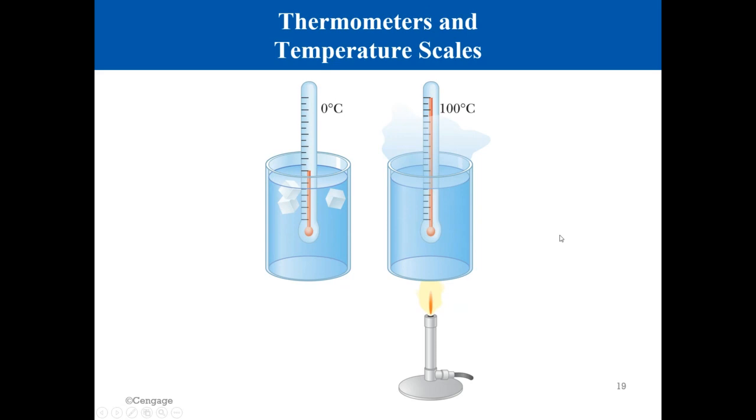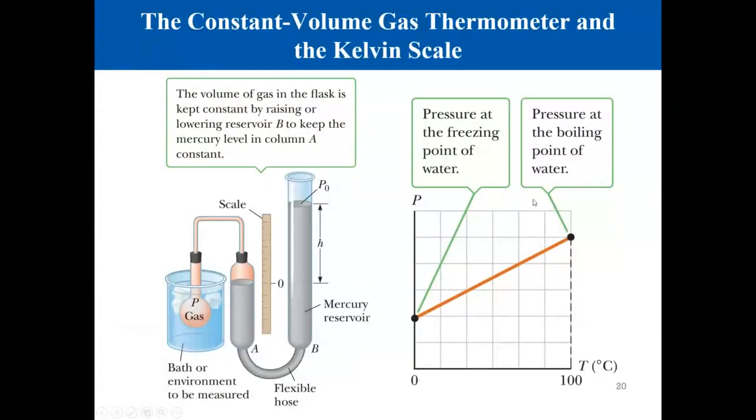If you want to take the same reference and check it on the Fahrenheit scale, for the Fahrenheit scale, zero Celsius means 32 Fahrenheit. And 100 degree Celsius means 212 degree Fahrenheit. So what is here? 100 step for the Fahrenheit. It is 212 minus 32, which is 180 different steps or degrees.